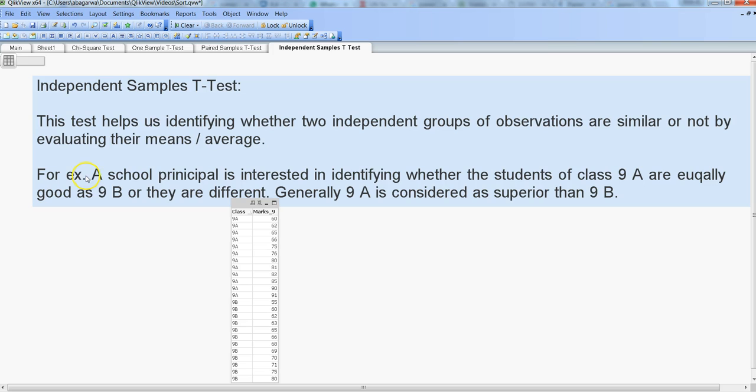So an example is that a school principal is interested in identifying whether the students of class 9A—so A is basically section, and that's what we generally call it here in India, but maybe in your country it may be a little different—but we have sections like 9A, 9B, 9C, and the idea is that the principal is interested in identifying whether students of class 9A are equally good as 9B.